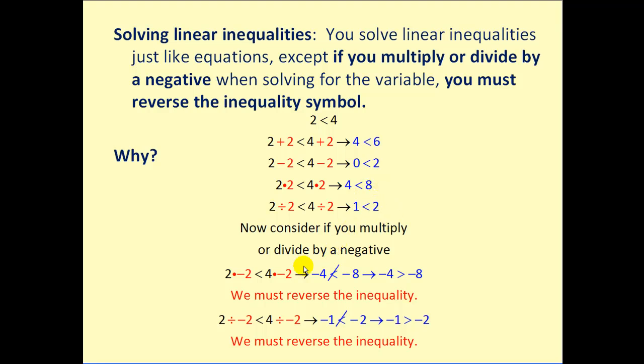However, if now we change it and multiply by a negative on both sides, we get a false statement. So in order to make it true, we have to reverse the inequality. And the same thing is true if we divide both sides by a negative. We have to remember to reverse the direction of the inequality to maintain the true statement.